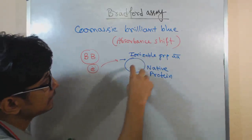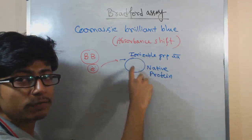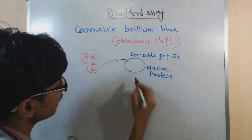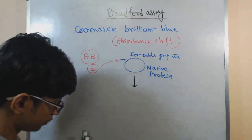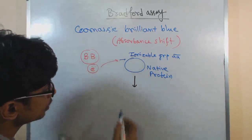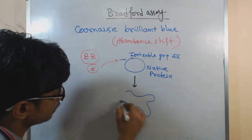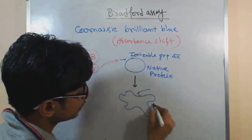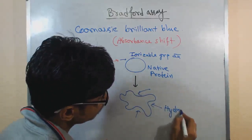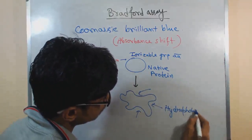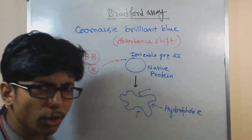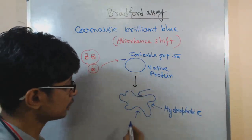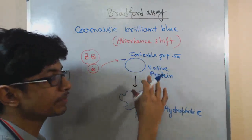Once this lone pair of electron is donated to any of the ionizable group of amino acid, what happens is the structure, the native structure of the protein gets distorted. As the native state of this protein gets distorted, it becomes kind of unstable in its structure. Now the protein is exposing all of its hydrophobic residues, not all but some. Some of the hydrophobic residues of those proteins start to be exposed outside due to this native state disruption.